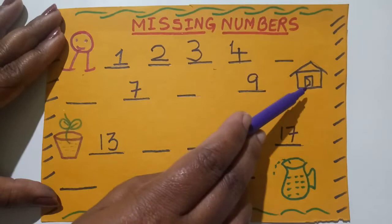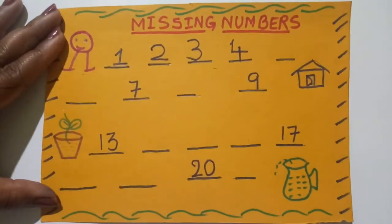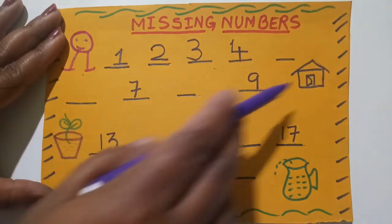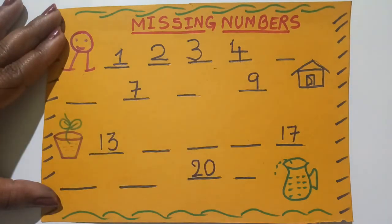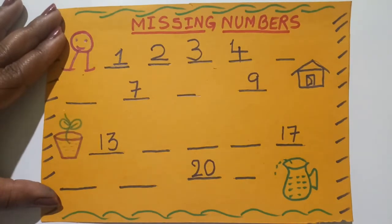And this kid wants to reach his house. And there are some numbers filled in the blanks. And some are not filled. Let us help this kid to reach his house. But before that, what we have to do? We have to fill these blanks. But even before that, what you have to do?